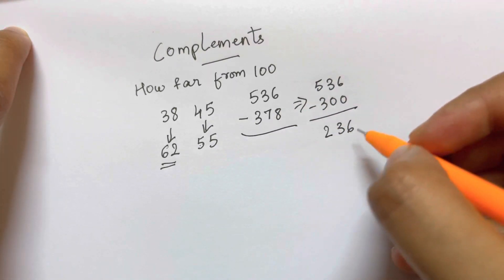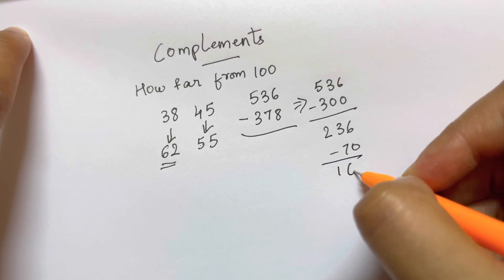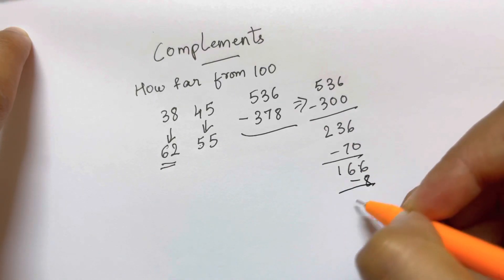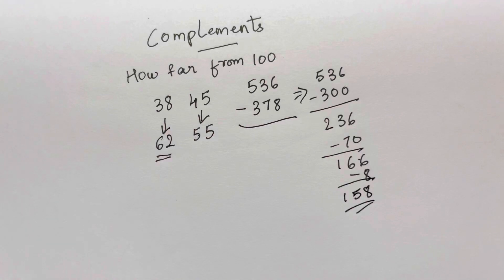236 minus 70. You are going to do like this. So it is just 166 minus 8. That is 158. Isn't it? That's what you are going to do it in mind.